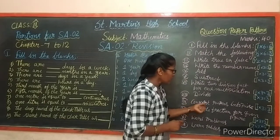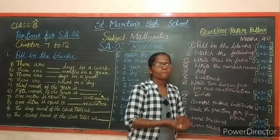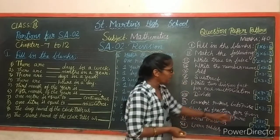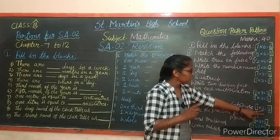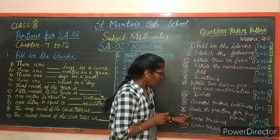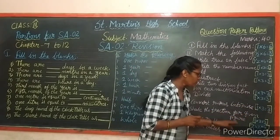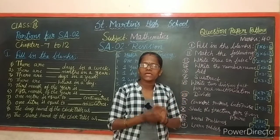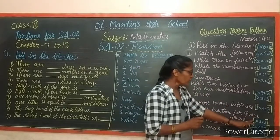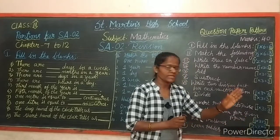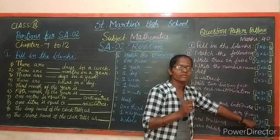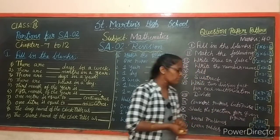Next, convert rupees into paise - the rupees are given and you convert them into paise. Each carries 1 mark, 3 questions totaling 3 marks. Next, shade the fraction for given figures - fraction numbers will be given and you shade accordingly. Each carries 1 mark, 3 fractions totaling 3 marks.